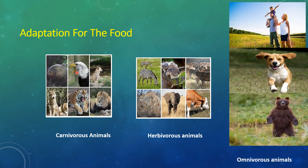Apart from that, some animals depend on other living animals for food — they are called parasites. Examples are mosquitoes, leeches, and flies. They have a sucking tube in their mouth, which they use to suck the blood of other animals.